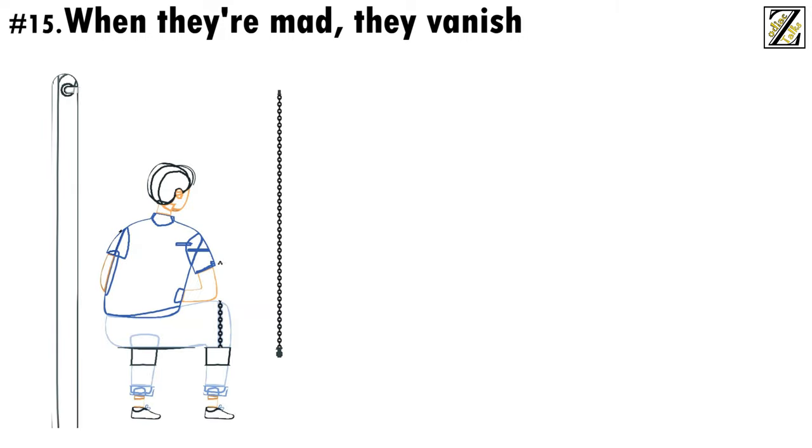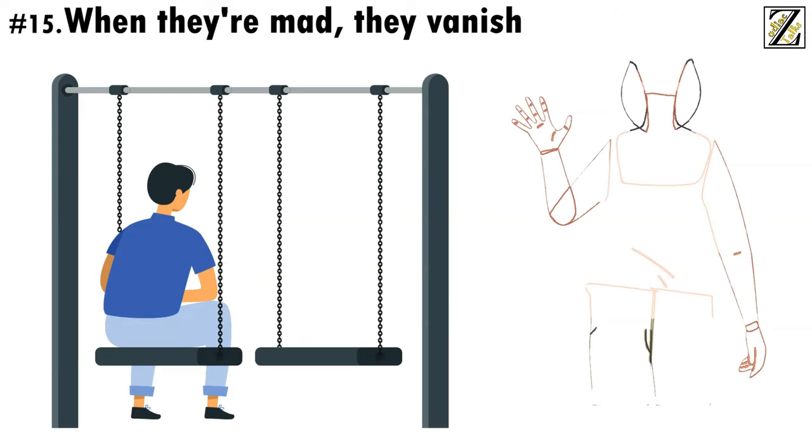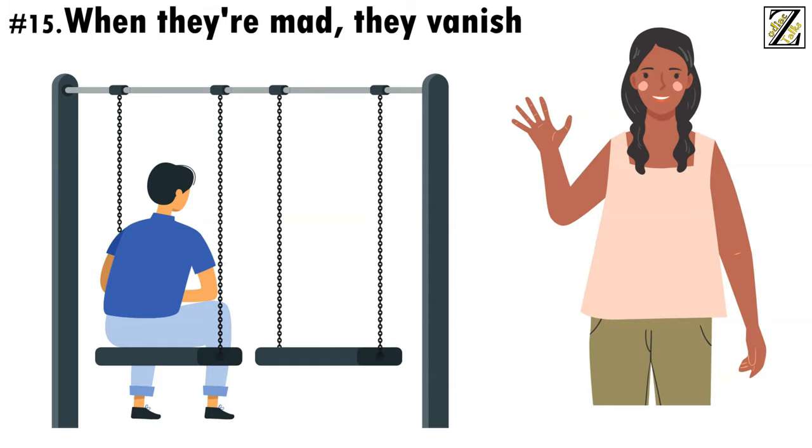Number 15. When they're mad, they vanish. When they're angry at someone, Cancers tend to distance themselves from the situation, choosing to vent and fume in privacy until they've gathered their thoughts and feel ready to face the world again.